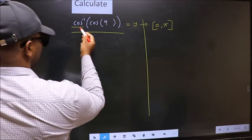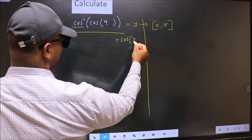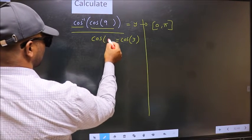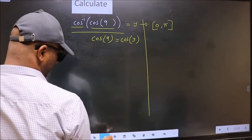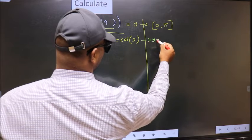Shift cos inverse to the other side. It will become cos y. And this, no change. Now, comparing both sides, we get y to be 9.